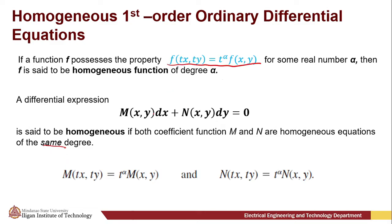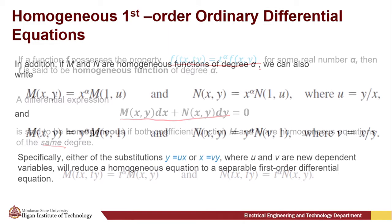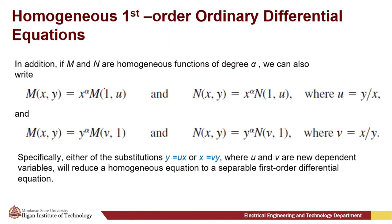We can apply this to our differential equation: M(tx, ty) = t^α · M(x,y) and N(tx, ty) = t^α · N(x,y). In addition, if M and N are homogeneous functions of degree α, we can also write M(x,y) = x^α · M₁(u) and N(x,y) = x^α · N₁(u).